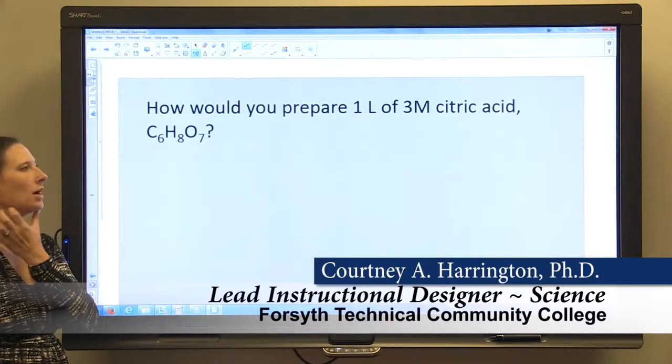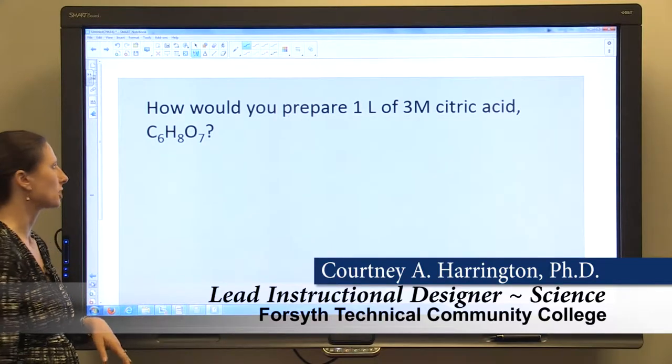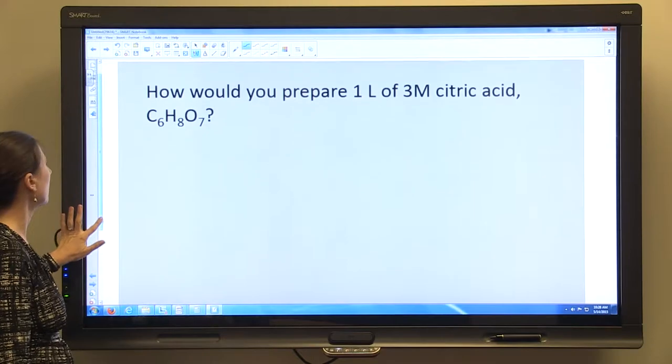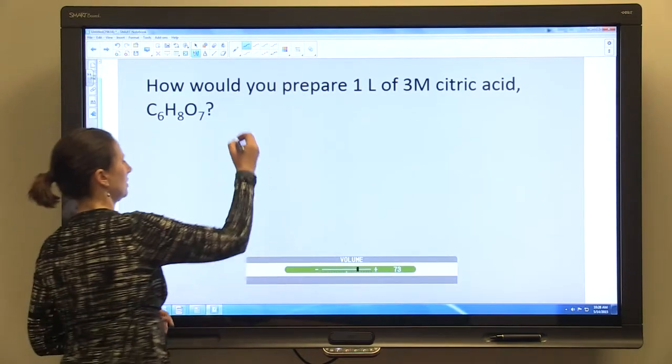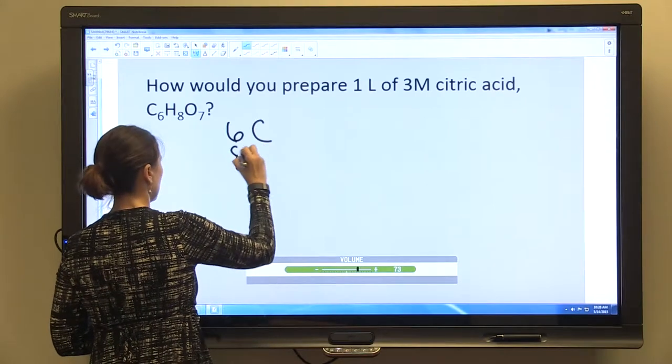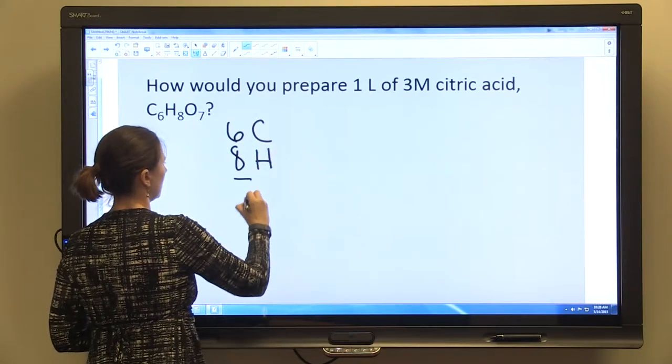So how would we prepare one liter of a three molar citric acid solution? The molecular makeup of citric acid has six carbons, eight hydrogens, and seven oxygens.